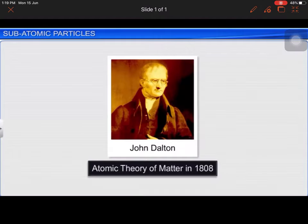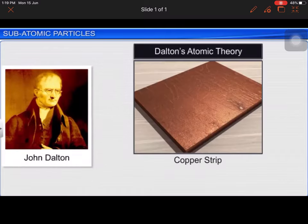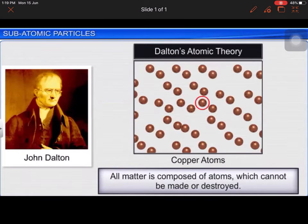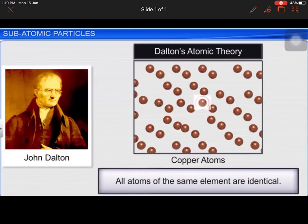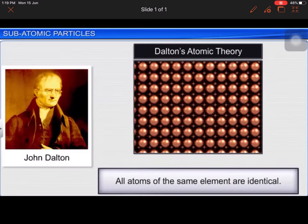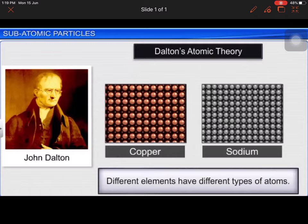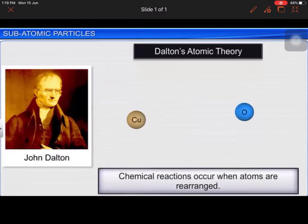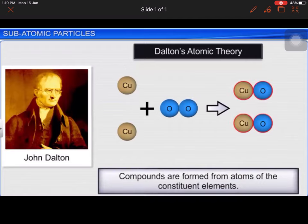Dalton proposed that atom is the ultimate particle of matter. This theory is called Dalton's atomic theory. It postulates that all matter is composed of atoms that cannot be made or destroyed. All atoms of the same element are identical. Different elements have different types of atoms. Chemical reactions occur when atoms are rearranged. Compounds are formed from atoms of the constituent elements.